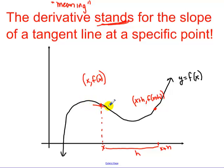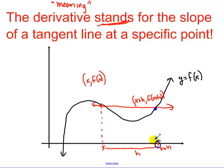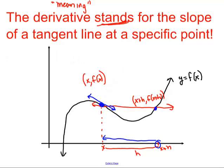This point over here is x plus h, with our function evaluated there. The slope of the secant line through those two points is that formula. But now talking about limits, we make h smaller — we drag that second point infinitely close to x — and we get a tangent line, shown in blue.